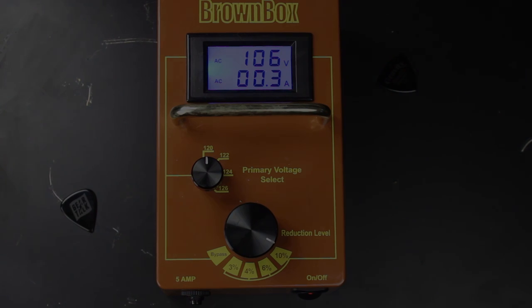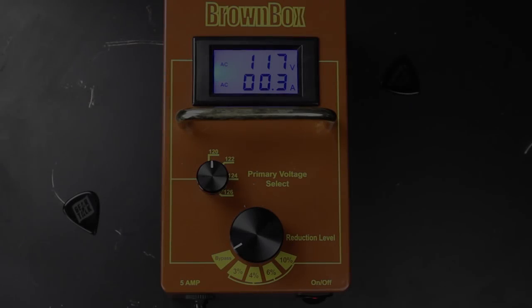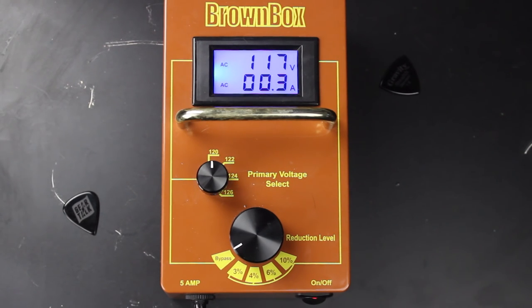Okay, let's check out one more amp. Okay, now we're checking out the 65 amp Soho, British voiced, 20 watts, EL84s. This was engineered for 120 volts. Here's bypass.